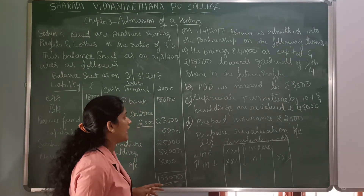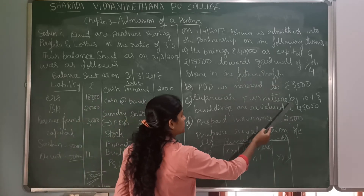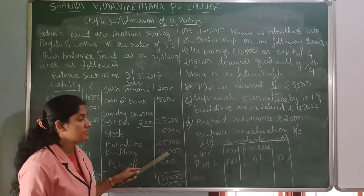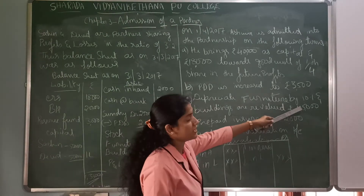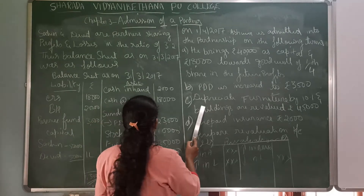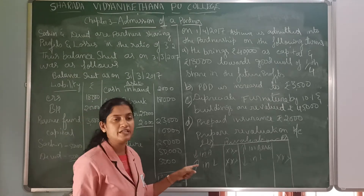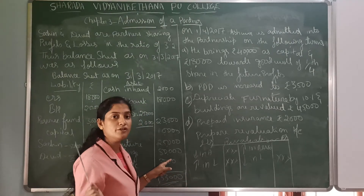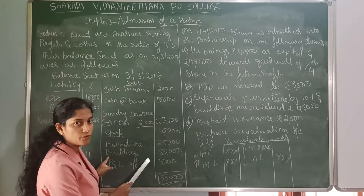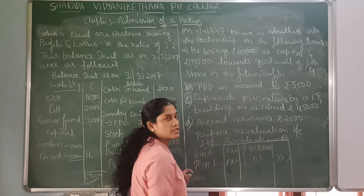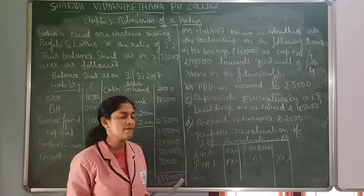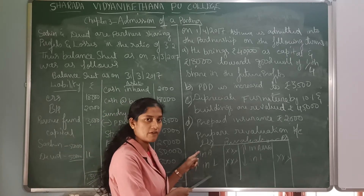Next, depreciate furniture by 10%. The value of furniture is Rs. 25,000. So 25,000 × 10% = Rs. 2,500. Asset decreases are debited, so Rs. 2,500 is debited in the revaluation account. Next, building is revalued at Rs. 45,000. The original value was Rs. 50,000. So building value went down by Rs. 5,000 — a decrease in asset — which is also debited in the revaluation account.